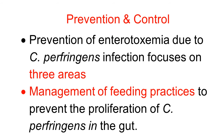Prevention and control of enterotoxemia type A: the prevention of enterotoxemia caused by Clostridium perfringens infection focuses on mainly three areas. The first area is management of feeding practices, which is very important because the organisms are normal inhabitants of the digestive tract. If the management of feeding practices is proper, the proliferation of Clostridium perfringens will be prevented.